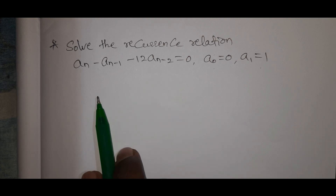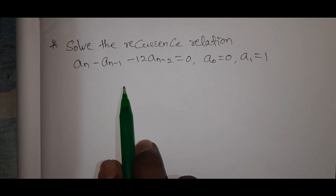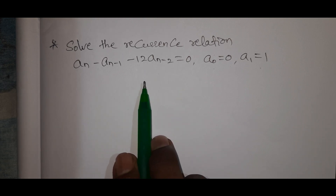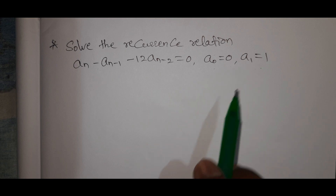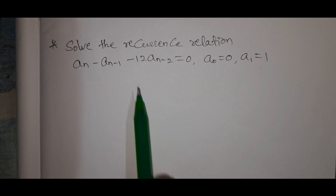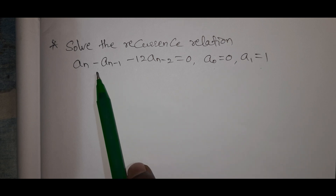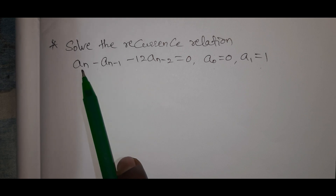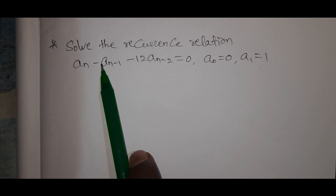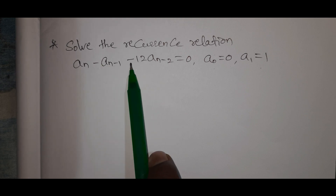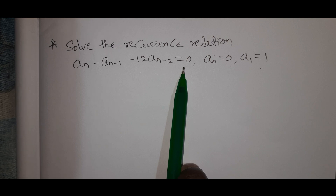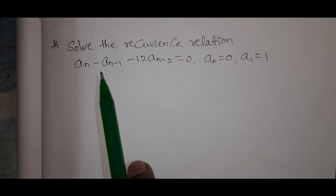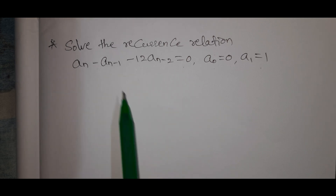The recurrence relation is: a_n minus 7a_{n-1} minus 12a_{n-2} equal to 0, with a_0 equal to 0 and a_1 equal to 1. Note: the coefficient here is minus 7, not minus 1 — that was a mistake in the question.